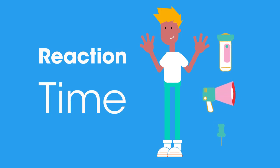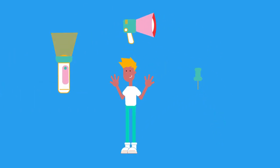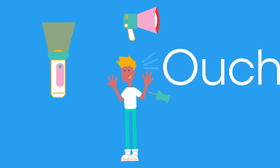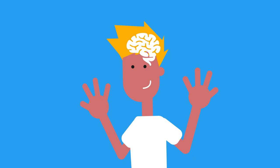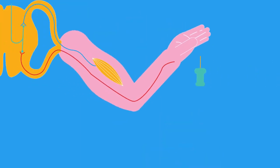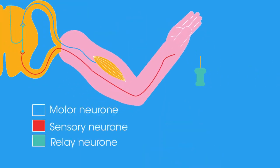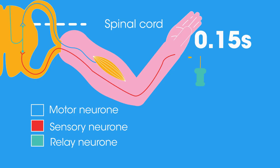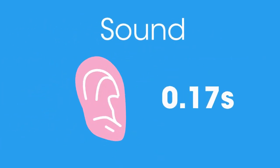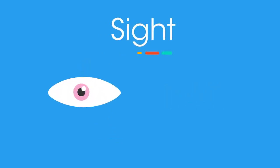Our reaction time does to some extent depend on what the stimulus is. The response times for sight and hearing are both slightly longer than for touch, as the brain is involved in processing the incoming data before an instruction can be transmitted for a suitable response. We respond to touch quite differently through the reflex arc, where the response is a reflex action mediated by the spinal cord and not the brain.